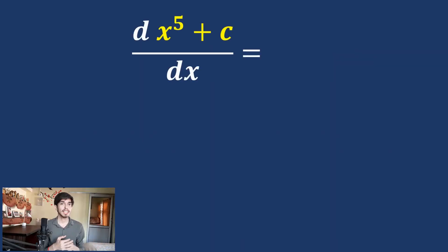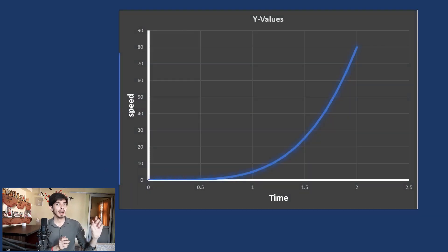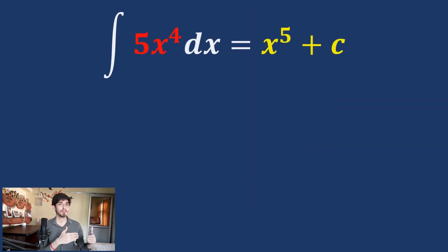Now we have two concepts: area under the curve and indefinite integration. Let us join these two. A mathematical theorem was proved — which is quite difficult to cover at the level of this video — showing that the difference between the anti-derivative of a function is simply the area bounded by that function, which was a really amazing discovery. For example, the derivative of x⁵ + c is 5x⁴, so the integration of 5x⁴ is x⁵ + c. If we have a curve which is 5x⁴ and need to find the area bounded between 1 and 2, its integration is x⁵ + c.